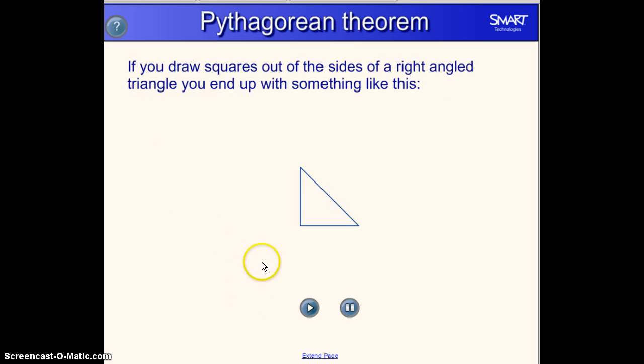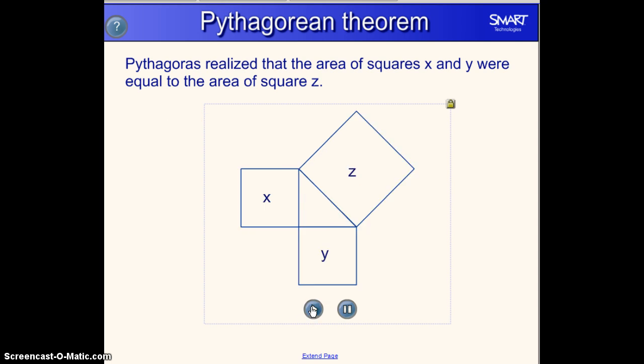The Pythagorean Theorem was developed because Pythagoras drew two squares out of the sides of the right angle. So he had two squares off the two legs and then one square off the hypotenuse. He realized that the areas of the squares of X and Y added together were equal to the area of square Z. And you can see it demonstrated here in the video as the two smaller squares collapse into the larger square.